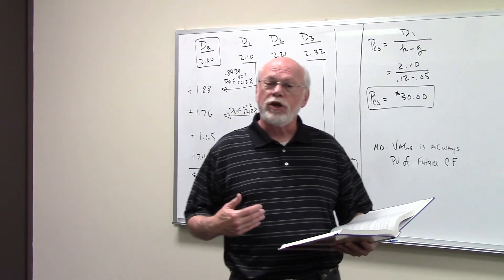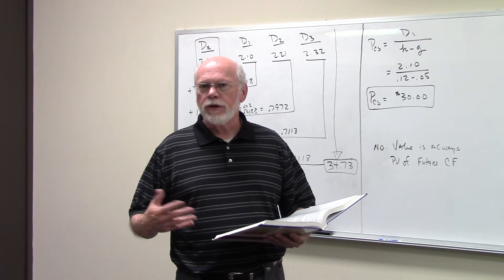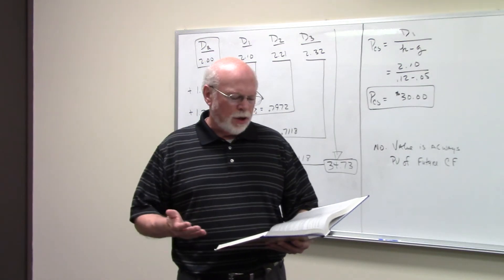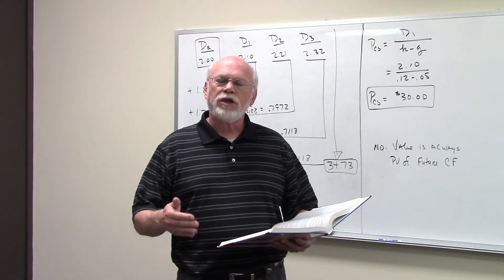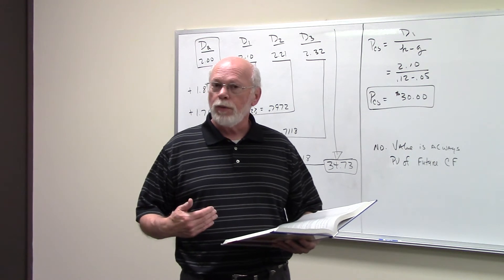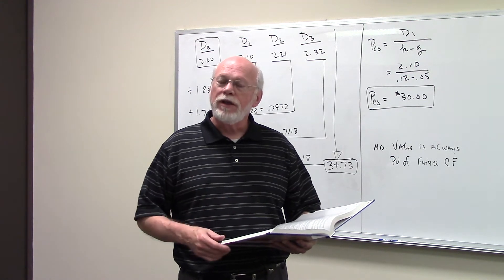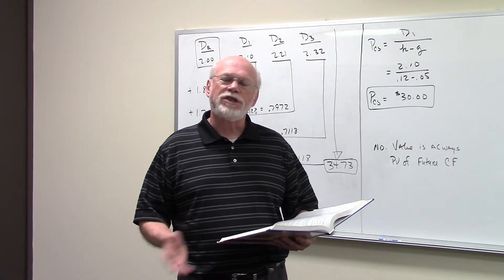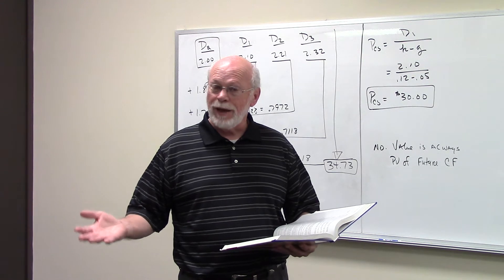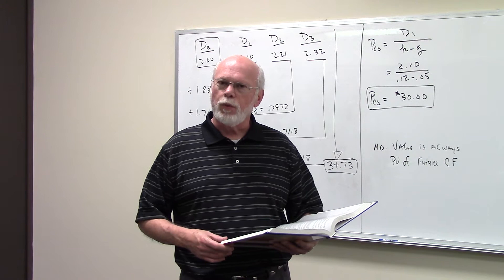The best way to value that is to use the constant growth model, the Williams model, the Gordon model, which is a little formula that you'll see at the end of this problem. The first parts, A through D, are stepping you through the same steps you would do if you were doing supernormal growth or non-constant growth. But they're giving us constant growth.